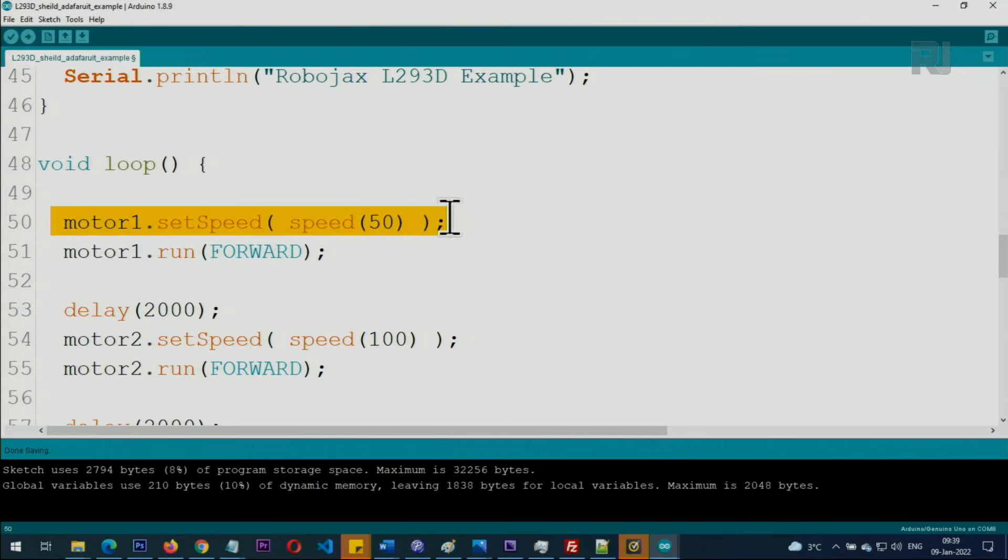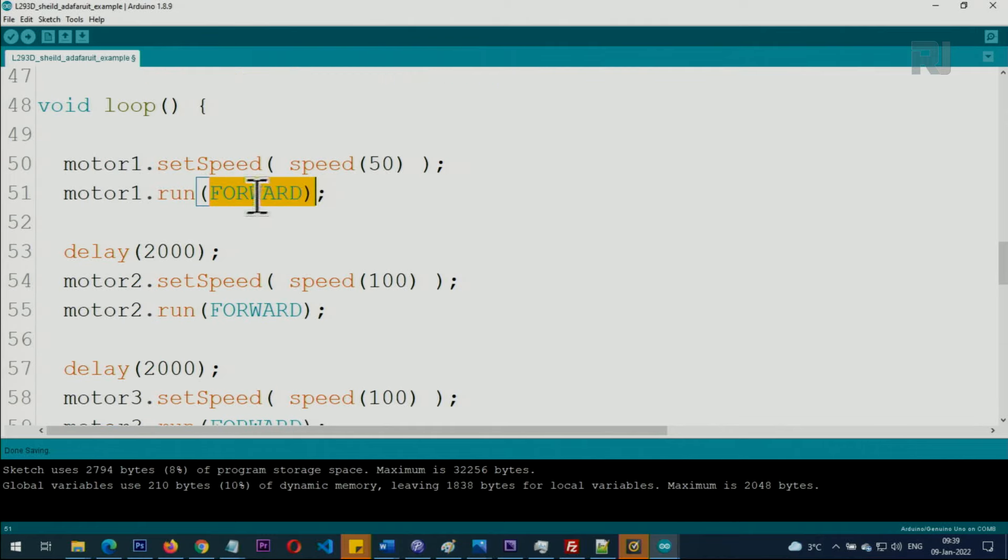And so once you set the speed for motor one, then you take action. Motor one dot run and then forward. So this will send the motor forward. And this line says keep it for two seconds at that forward direction with that speed.